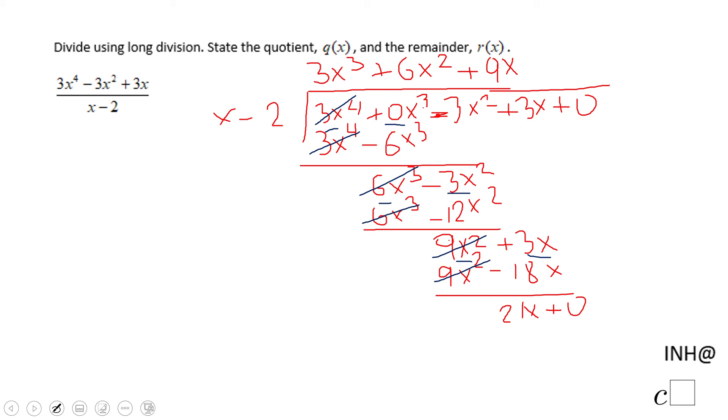And then what do you multiply x by to get 21x? And that is 21. 21 times x is 21x, 21 times negative 2, negative 42. And next step is to subtract, and we have 0 minus negative 42—that is positive 42. Okay.